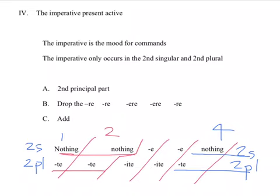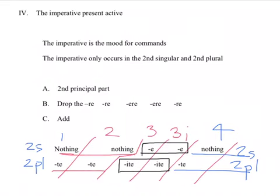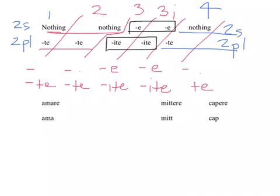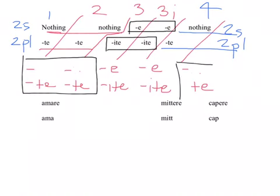Often the first, second, and fourth conjugations behave like each other, and the third and third-I often behave like each other. For the third conjugation, you add -e for the second person singular and -ite for the second person plural. For the third-I, you also add -e for the second person singular and -ite for the second person plural.